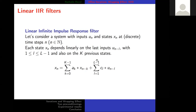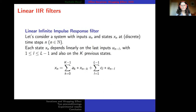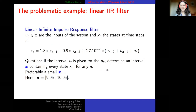The origin of this question comes from control theory and from a linear infinite impulse response (IIR) filter. You have inputs u_n and states x_n, and the time is discrete, so the time steps are called n. Each state depends linearly on the last input and some previous inputs u_{n minus something}, and also on a finite number of previous states x_{n minus k}. So the new state x_n is a linear combination of some previous states and previous inputs.